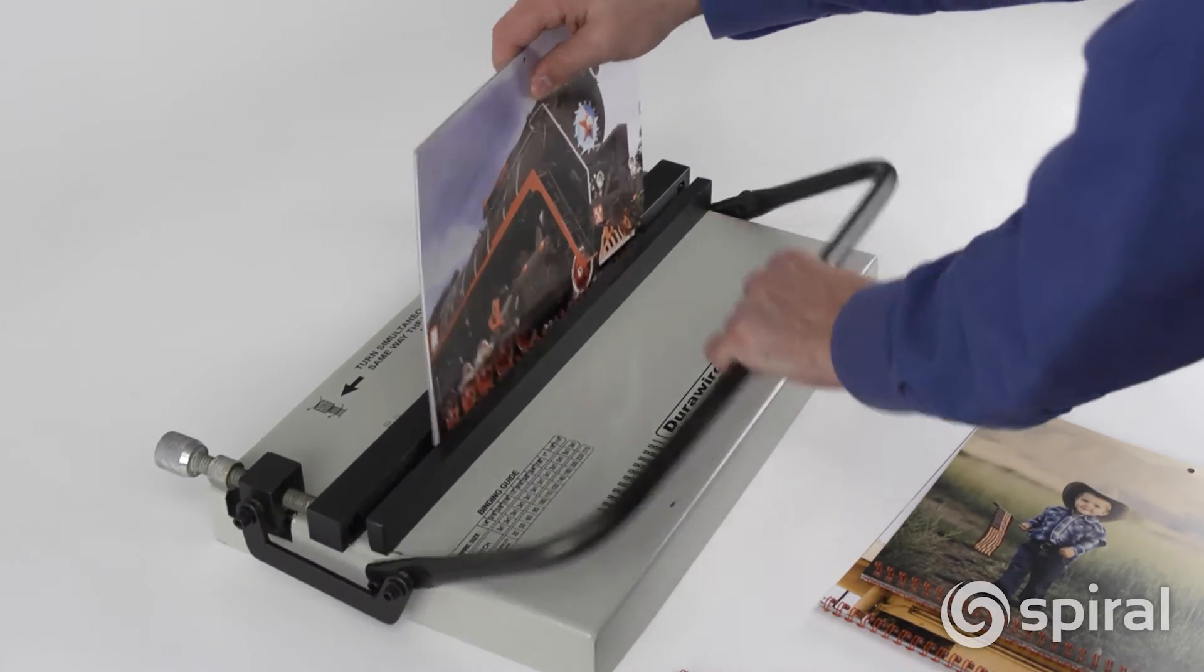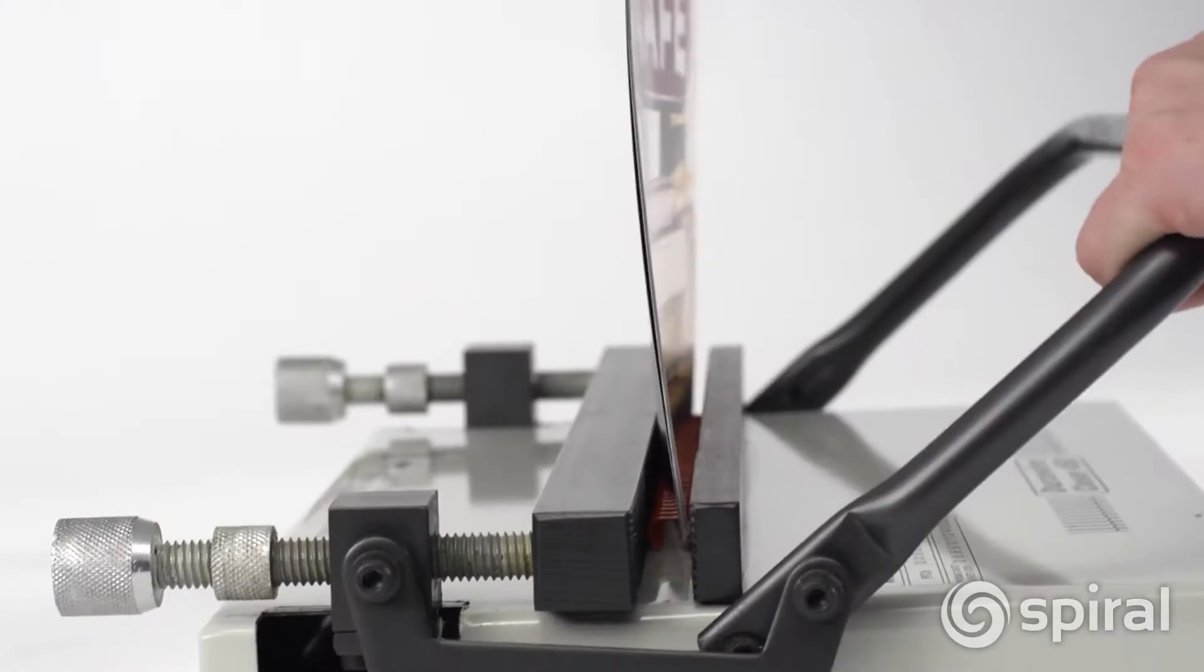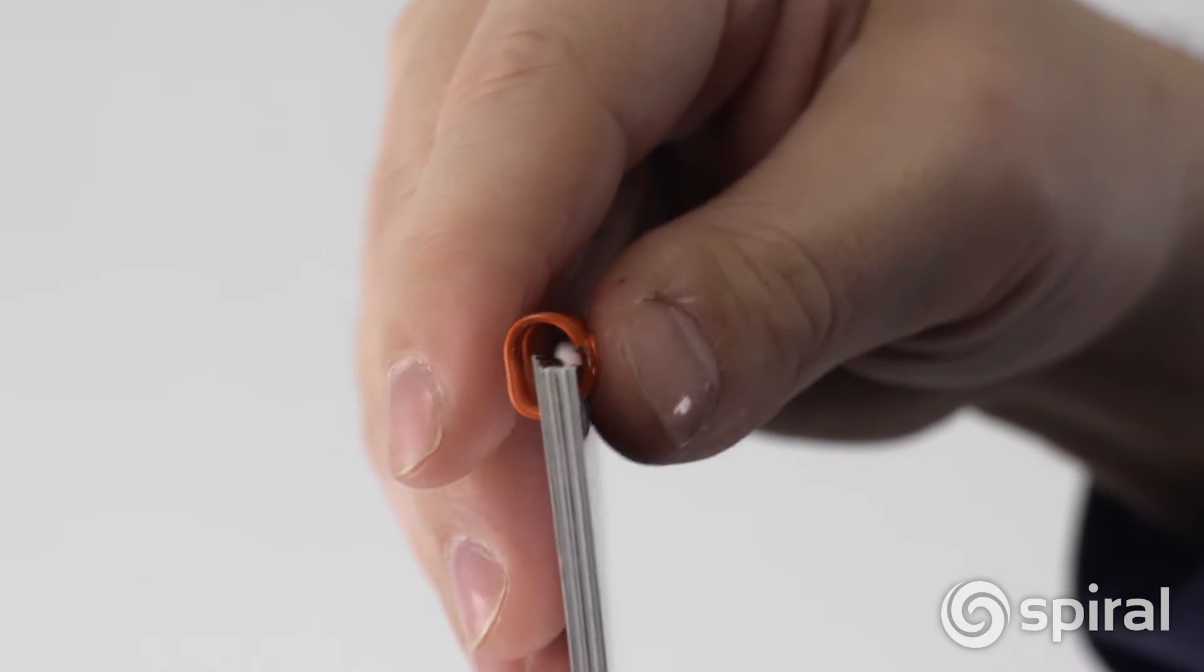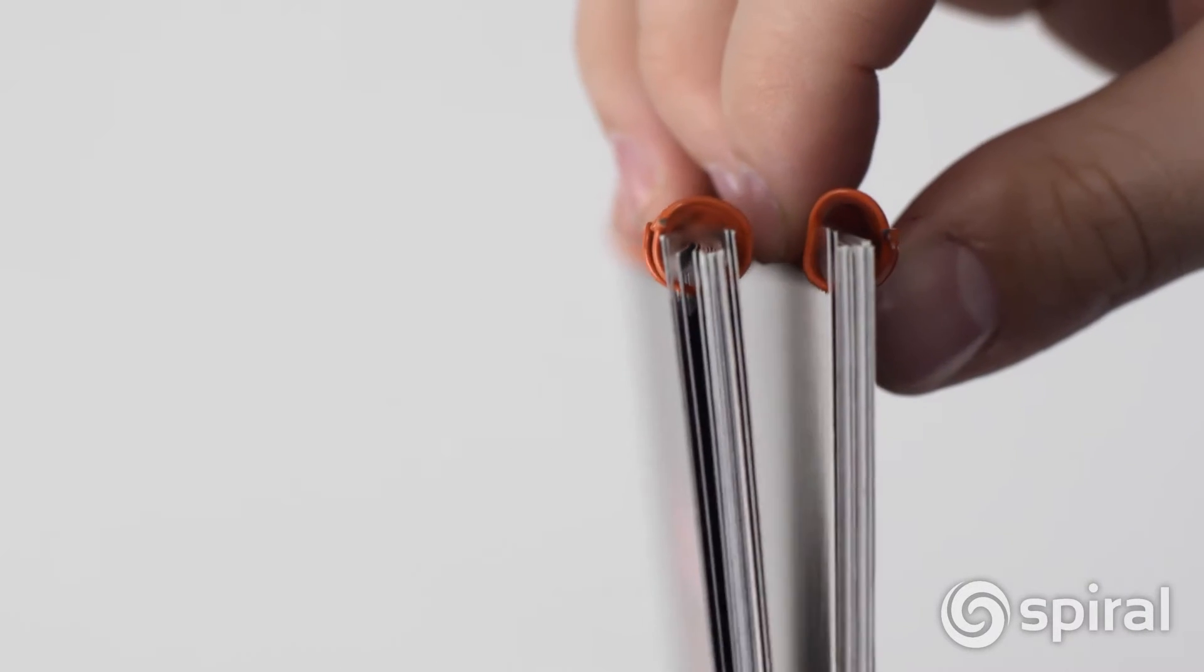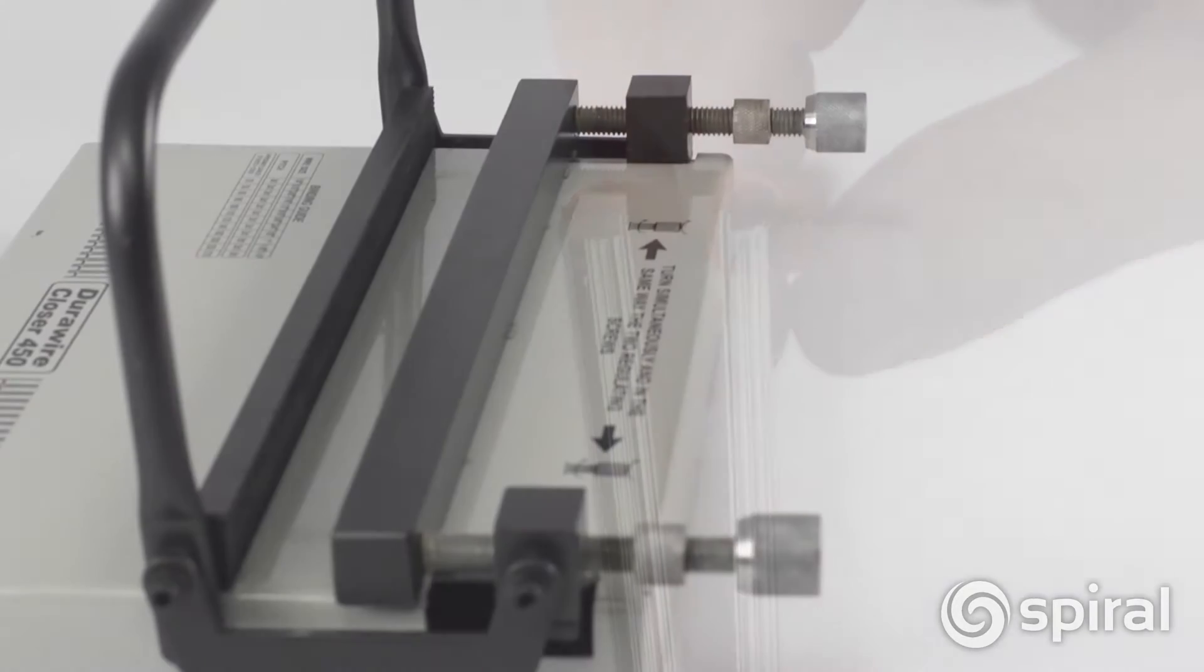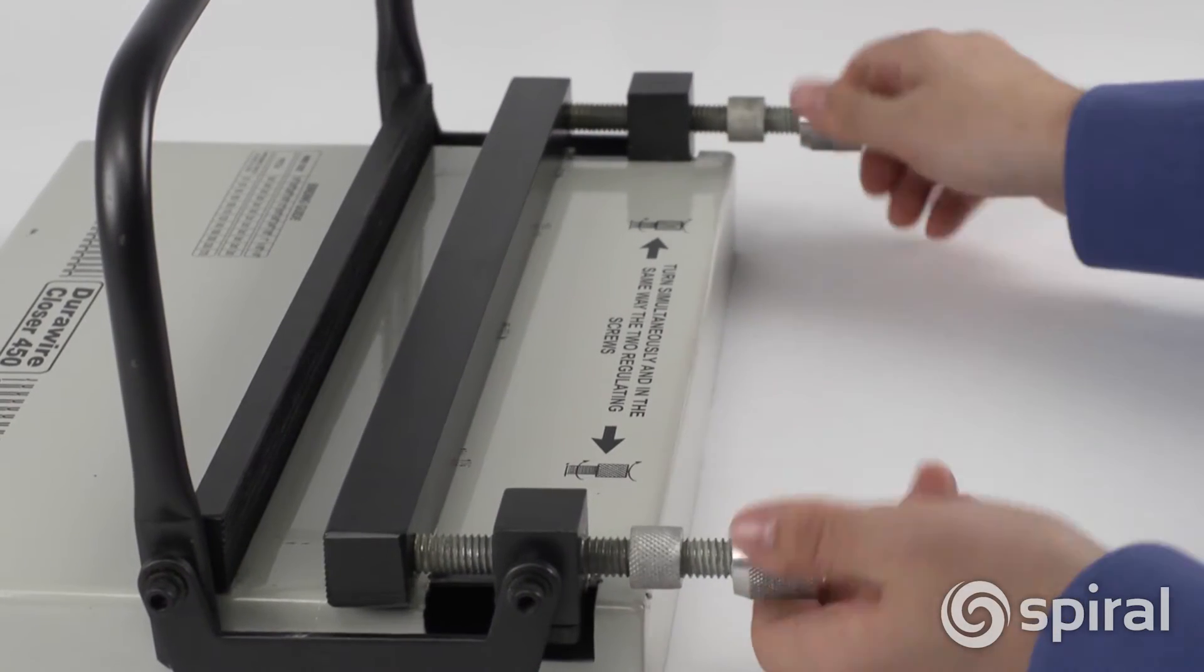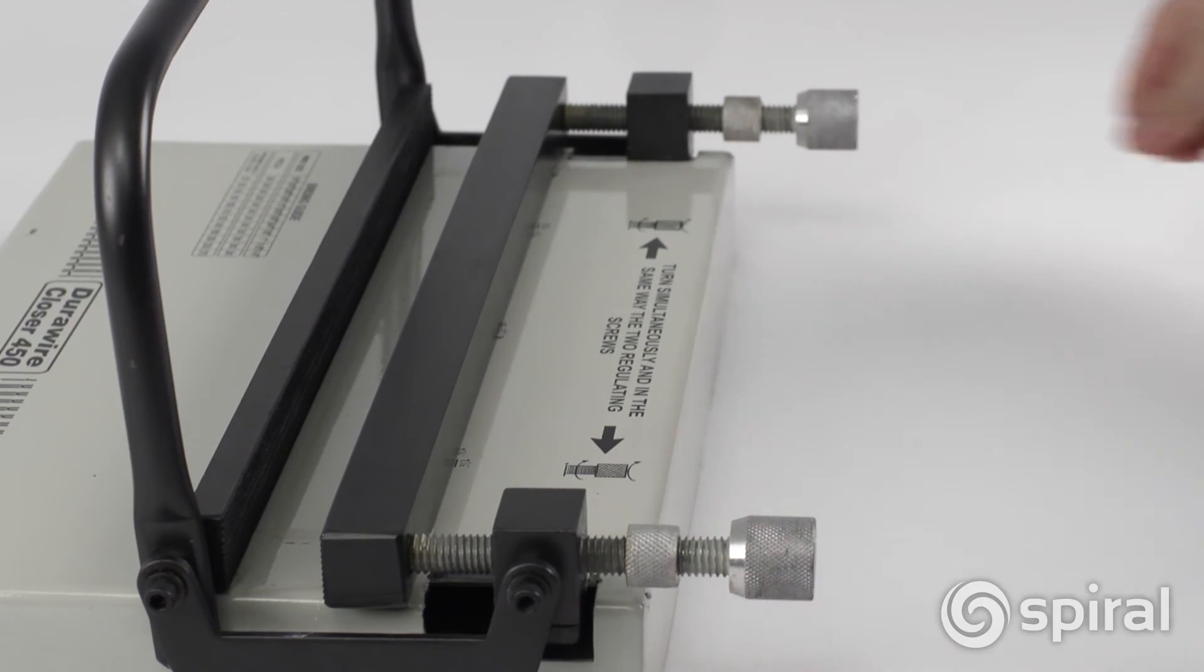The vertical closing bar helps prevent the wire from slipping during crimping. When wire slips in the closing bar, it can create a misshaped wire that isn't perfectly round. The DuraWire 450 provides fast and accurate setup of the wire closer that guarantees perfect wire closing.